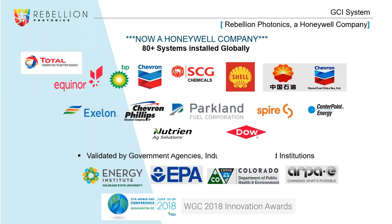Prior to Honeywell buying Rebellion back in December, these were the Rebellion client lists. Honeywell did purchase us in December of last year, and it was very exciting. They've already come in and done a whole Six Sigma operation on our manufacturing floor. We've streamlined our manufacturing because of that — we're able to get builds out in 30 days instead of four months.